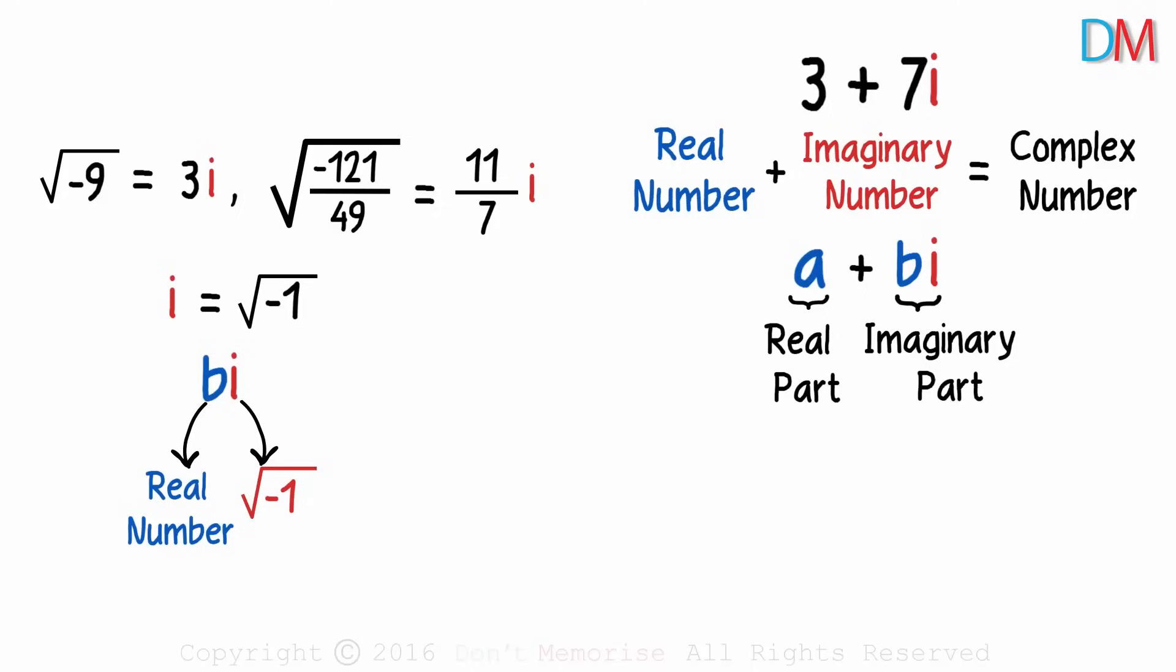Now let me ask you something interesting. When will the two complex numbers a plus bi and c plus di be equal? They will be equal only if both conditions are satisfied. First, a is equal to c and second, b is equal to d. Yes, only if a is equal to c and b is equal to d will the two complex numbers be equal.